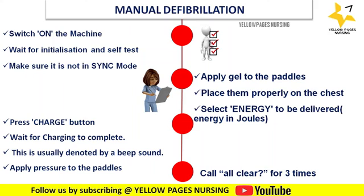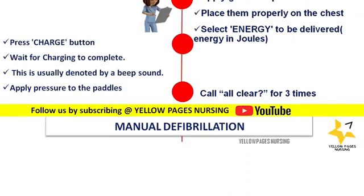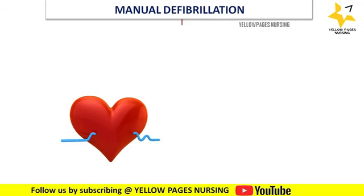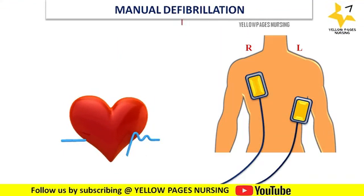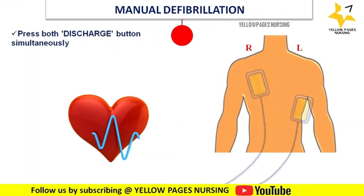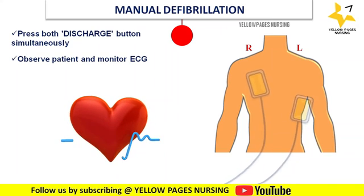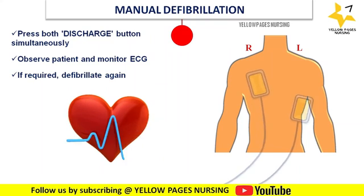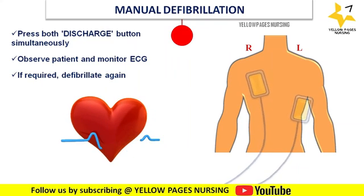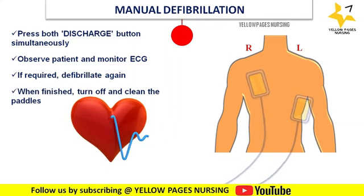Call 'all clear' three times, make sure all personnel are away from the patient, bed, and equipment. Press both discharge buttons simultaneously, observe the patient and monitor ECG. If required, defibrillate again. When finished, turn off and clean the paddles.